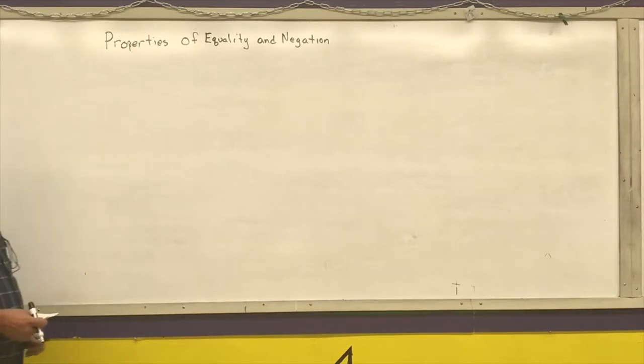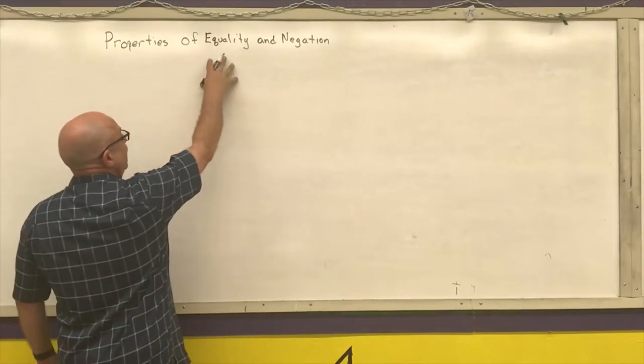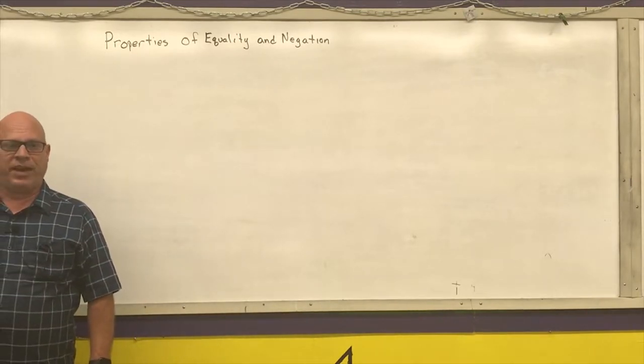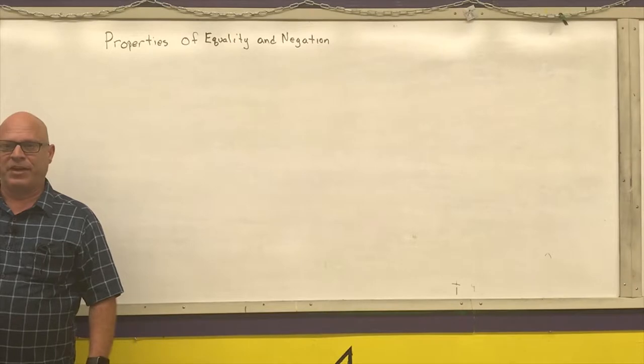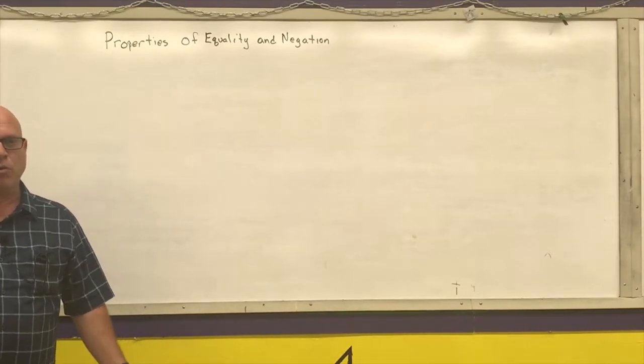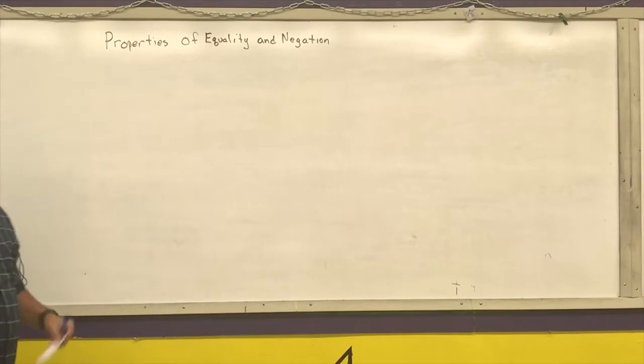We're going to discuss the properties of equality and negation. Basically, what the properties of equality state is that I can do the regular four arithmetic operations to two things that are equal as long as I do the same thing. I'm going to write them a couple different ways.